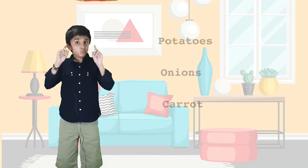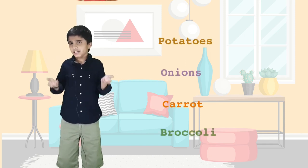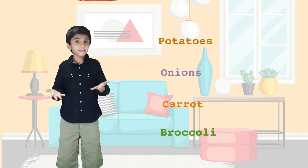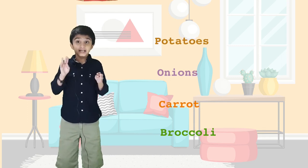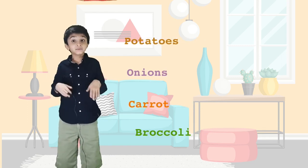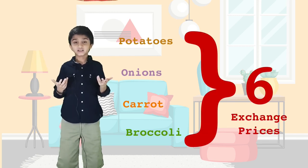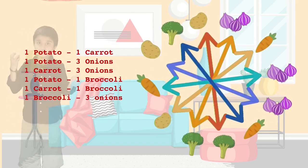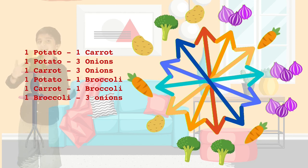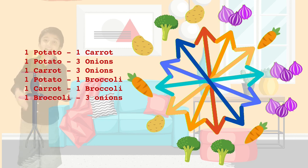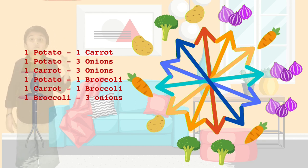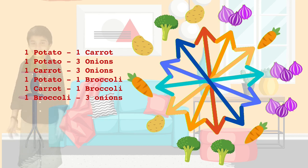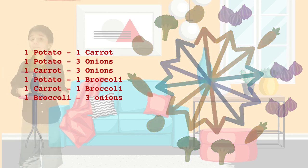Now if you add one more item like broccoli to make a salad, it will taste even better. But with four items we will have six exchange prices: one potato equals one carrot, one potato equals three onions, one carrot equals three onions, one potato equals one broccoli, one carrot equals one broccoli, one broccoli equals three onions. It's very, very complicated.